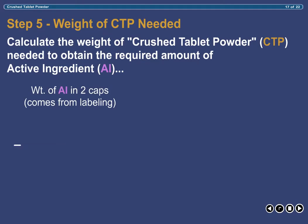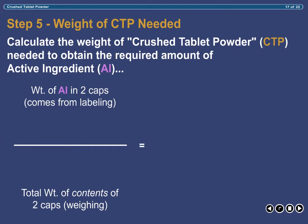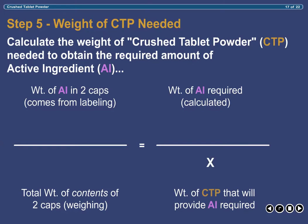We use the following formula to calculate the amount of capsule powder that will provide the amount of active ingredient needed to prepare the compound. In this example, the weight of active ingredient in two commercial capsules is 650mg or 0.65g. The total weight of the contents of two source capsules is 916mg or 0.916g. And the amount of active ingredient needed for our compound is 3.15g.